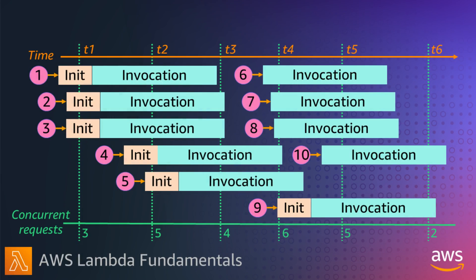In another video, I covered Lambda scaling and throughput, and talked about Lambda concurrency. Concurrency is the number of requests that your function is serving at any given time — think of it as simultaneous processing. When Lambda scales to handle additional concurrent requests, it provisions additional execution environments.